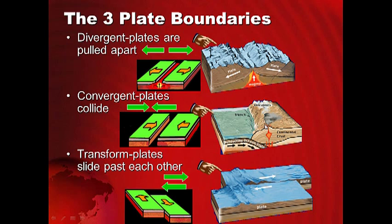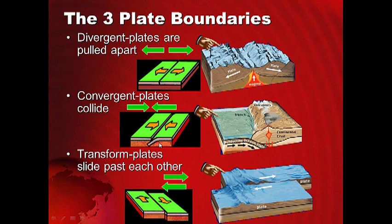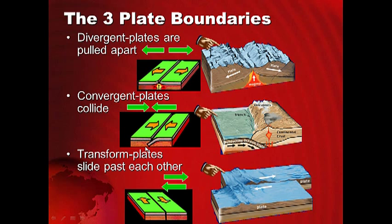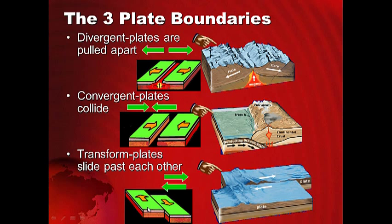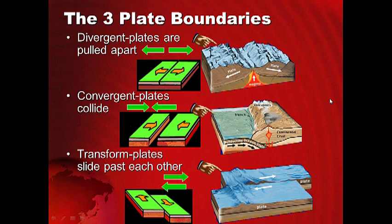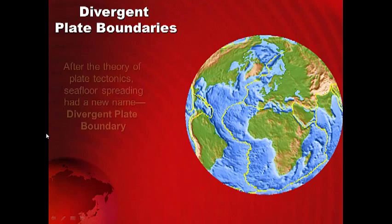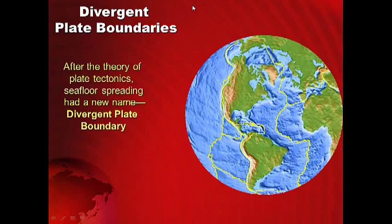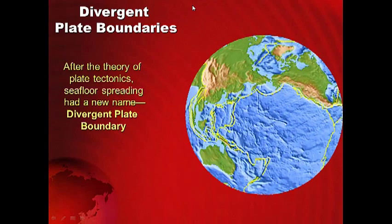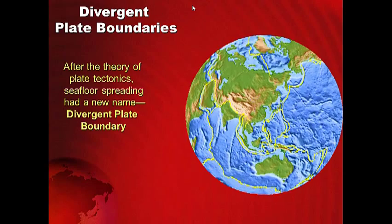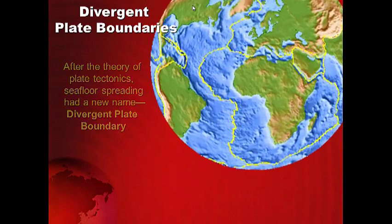Convergent plates are where plates collide — notice they collide, but one subducts and goes underneath the other. And then we have transform boundaries, where plates slide or move past one another. After seafloor spreading got a new name, divergent plate boundary, let's look at the divergent plate boundary.